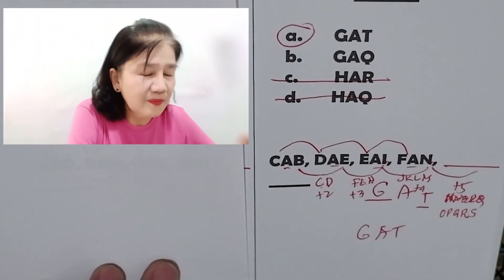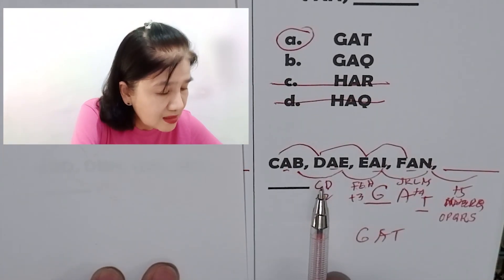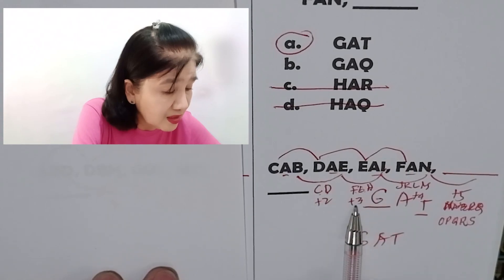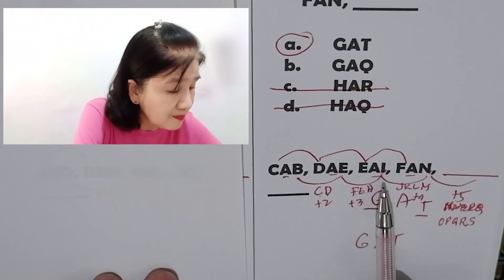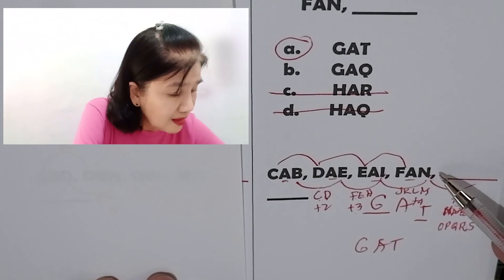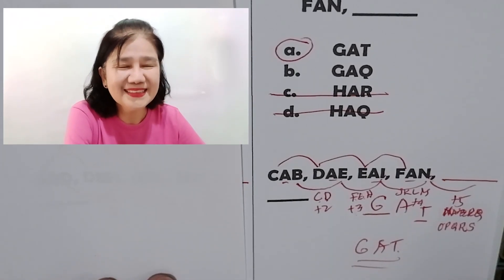Let me repeat the third letter verification. B C D E — plus two in between. E F G H — three letters in between. I J K L M N — that's N. From N: N O P Q R S T. So the answer is really G A T. I hope I was able to help you. Always remember: add kindness, subtract judgment, multiply understanding — equals Mrs. O's good life equation. Subscribe and click the notification bell.